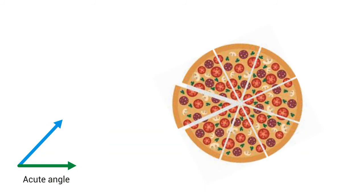Next we will move on to acute angle. The angle which is less than 90 degrees is known as acute angle. We can see the acute angle in the example of pizza.